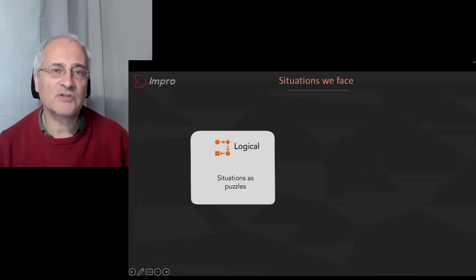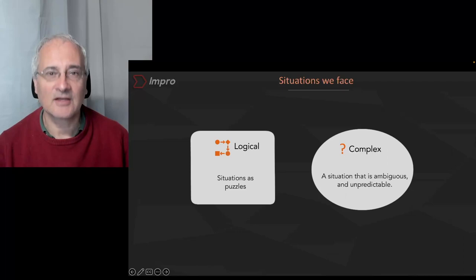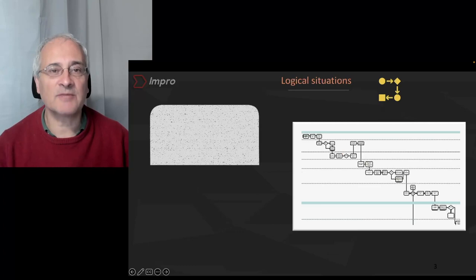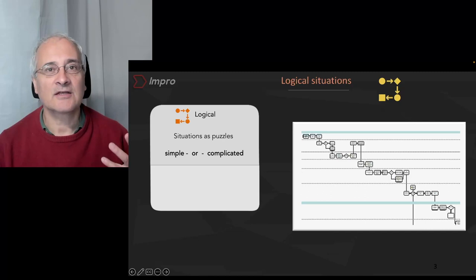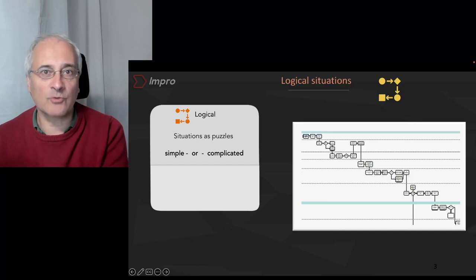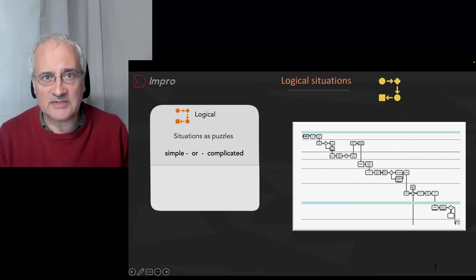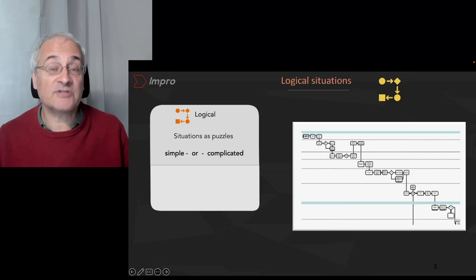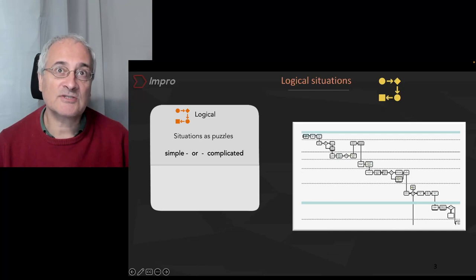Logical situations are those situations which we can see and understand as being step-by-step. They have cause and effect. The way that we deal with them is that we look at them in detail, we analyze, we get the data, we understand, and then we do something with that. If it's a problem, we'll fix it. This is probably the most common set of methods that we apply in organizations today. We use logical methods. They're very familiar to us and we apply them almost automatically.